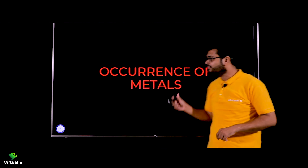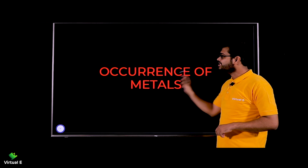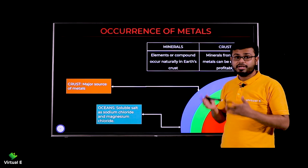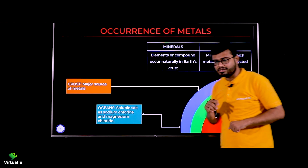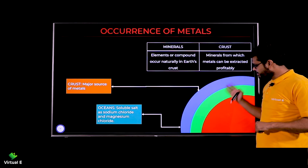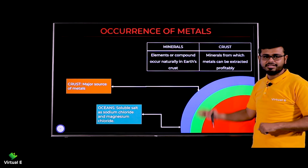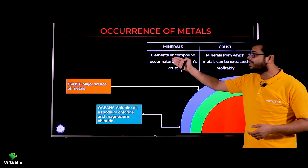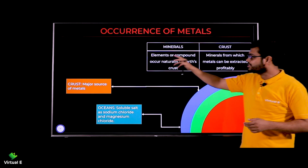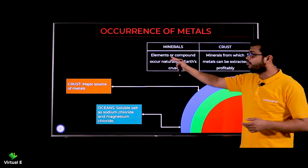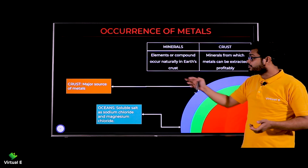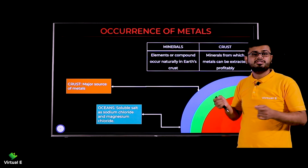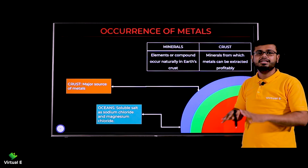Let's first study a few basic ideas — about the crust and minerals. We know that from Earth's crust we get minerals. Minerals basically are elements or compounds — we'll discuss why — that occur naturally in Earth's crust. That is the definition of minerals.